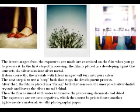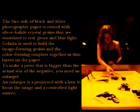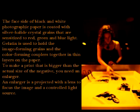The exposures are cut into negatives, which then must be printed onto another light-sensitive material, usually photographic paper. The face side of black and white photographic paper is coated with silver halide crystal grains that are sensitized to red, green, and blue light. Gelatin is used to hold the image-forming grains and the color-forming couplers together in thin layers on the paper. To make a print bigger than the actual size of the negative, you need an enlarger — a projector with a lens to focus the image and a controlled light source.